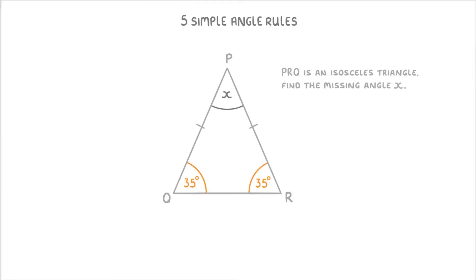Then if we think back to our first rule, which remember said that the angles in a triangle add up to 180 degrees, then we know that 35 plus 35 plus x must equal 180. So we can simplify that to 70 plus x equals 180, and then subtract the 70 to get x equals 110 degrees.